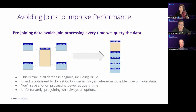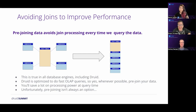Druid was designed for very fast analytic queries. To get the fastest queries, you benefit from pre-joining the data. While pre-joining uses more storage space, at query time it uses far less CPU because it doesn't have to process the join, enabling higher concurrency with fewer resources. That said, some datasets have slowly or fast-changing dimensions that don't allow pre-joins, so let's talk about how Druid does do joins.